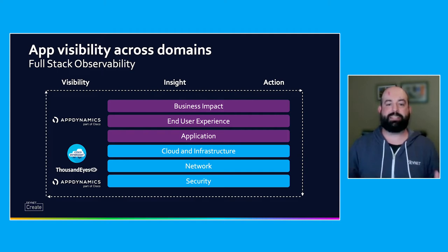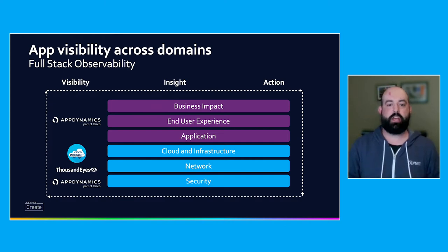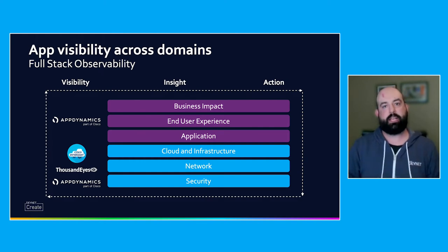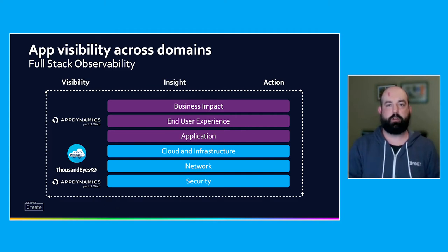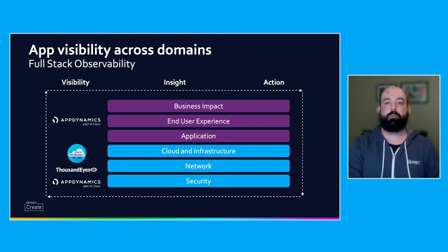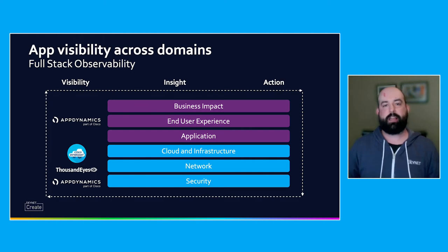With AppDynamics, we've always been known for our understanding of business impact — how your performance problems are impacting your business with context of the end-user experience and the application. When you combine Cisco Intersight, you start to get that cloud and infrastructure telemetry data to understand what your infrastructure is doing and how that is tied to the application: is it an application problem or an infrastructure problem? Then you tie in ThousandEyes, and you can start understanding the network — is it a network problem between the AWS region and your end-users in Europe? AppDynamics recently announced Cisco Secure Application, which gives you a real-time view of vulnerabilities within your applications, whether you're actively being exploited, and gives you a way of blocking that.